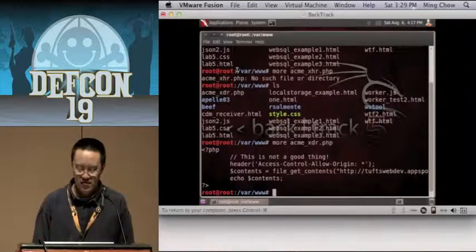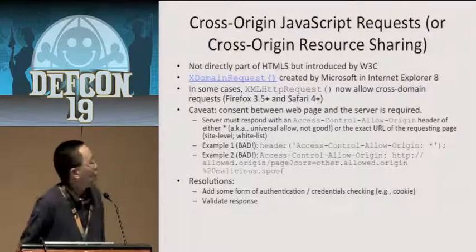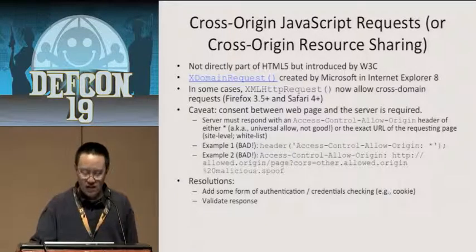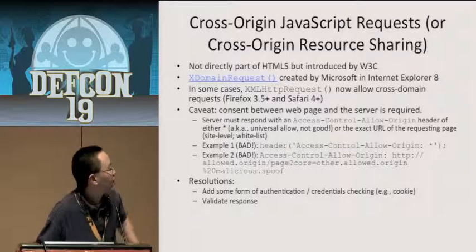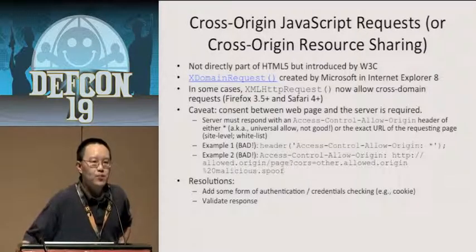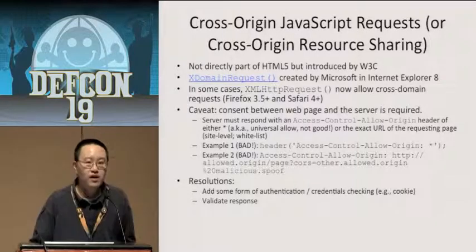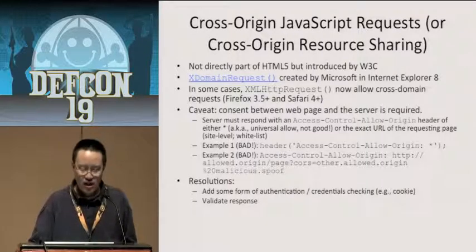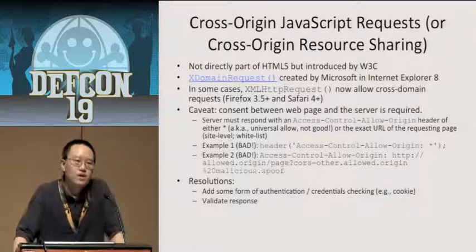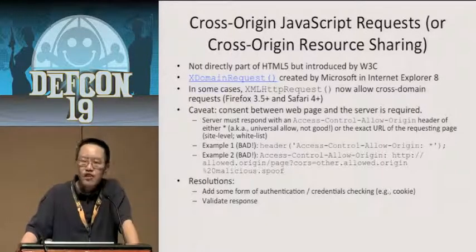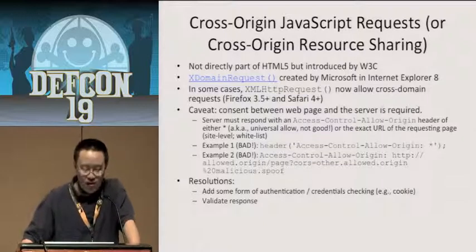If you're going to use the wildcard, what's even worse is using a space-separated list — the percent-twenty will be equated to a space, so you'll actually have two domains that are allowed when you intended one. The defense: add some sort of authentication or API key — like Google Maps did back in the day — or validate the response.